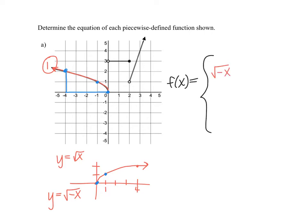Next, we look at the domain for this piece. The x values, because of the arrow, go to negative infinity, and they stop at 0. So this is for all values less than or equal to 0. Some books write a comma followed by x ≤ 0, while others include the word 'if' — writing 'if x is less than or equal to 0'. Both are perfectly fine.